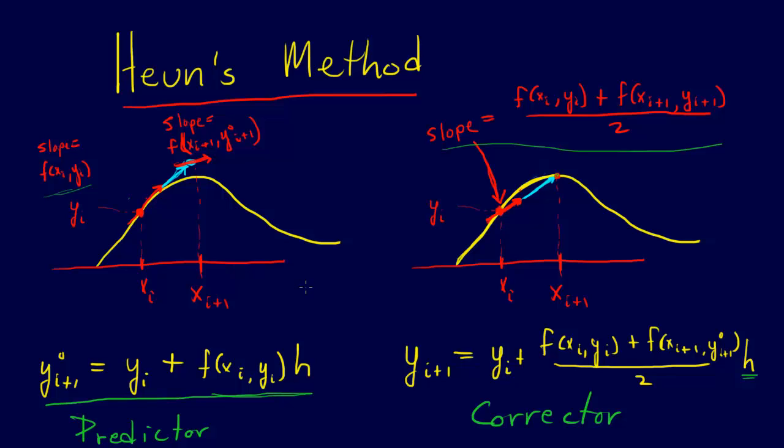that's called iterative Heun's method, but we can also just do Heun's method without iteration. And so this is Heun's method.